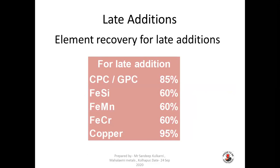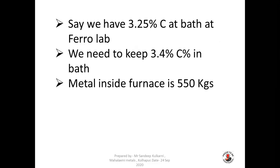Now we are going to see the second part — late addition. After all the charge calculation and adding all material, many times we have to fine-tune the final bath composition before we tap the material. This is called late addition of alloys and scraps. It is very important to have proper late addition control in the melt shop. Element recovery for late addition: carbon 85%, ferrosilicon 60%, ferromanganese 60%, ferrochrome 60%, and copper 95%.